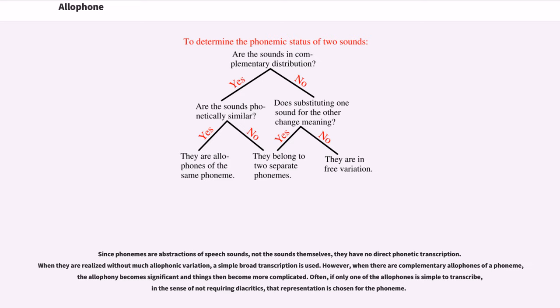Since phonemes are abstractions of speech sounds, not the sounds themselves, they have no direct phonetic transcription. When they are realized without much allophonic variation, a simple broad transcription is used. However, when there are complementary allophones of a phoneme, the allophony becomes significant and things then become more complicated. Often,